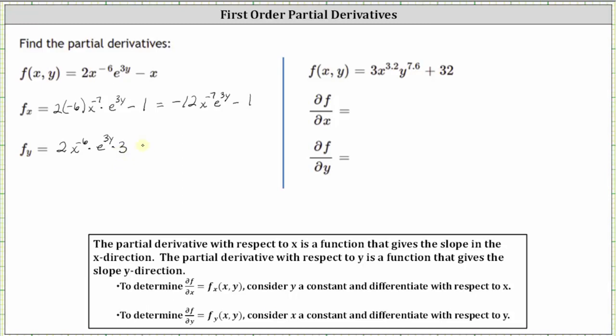Simplifying, we have 6x to the power of negative six, times e to the power of 3y.